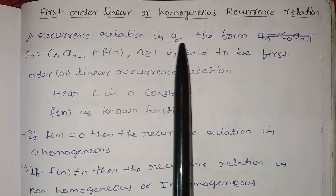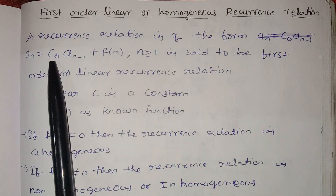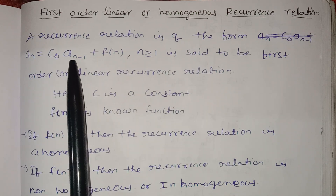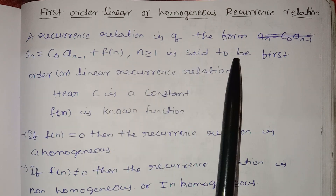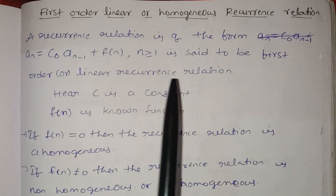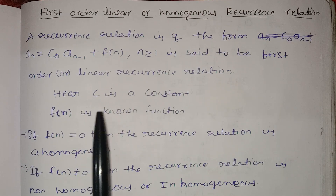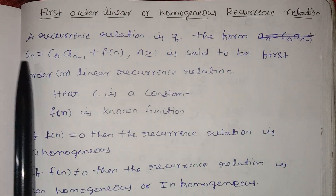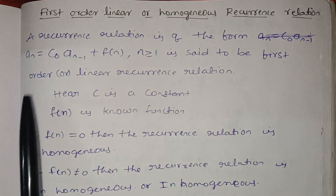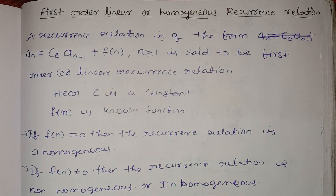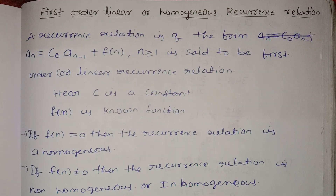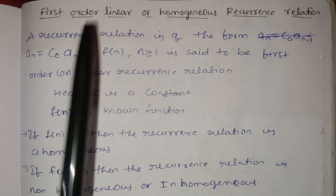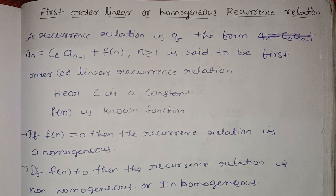A recurrence relation is of the form: aₙ = c₀ · aₙ₋₁ + f(n), for n ≥ 1. This is called a first-order linear recurrence relation. Here c is a constant and f(n) is known as a function. Because of the form aₙ = c · aₙ₋₁, and n ≥ 1, we call this a first-order linear recurrence relation.